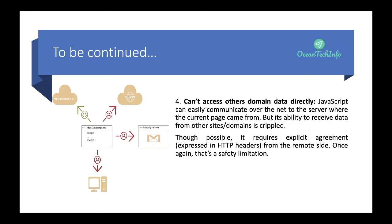JavaScript cannot access other domain data directly. JavaScript can easily communicate over the network to the server where the current page came from, but its ability to receive data from other sites and domains is restricted. Though possible, it requires explicit agreement via CORS headers from the remote site. For example, if your site wants to access Gmail data, you need an agreement with Gmail, and only then can the client access information from that site.